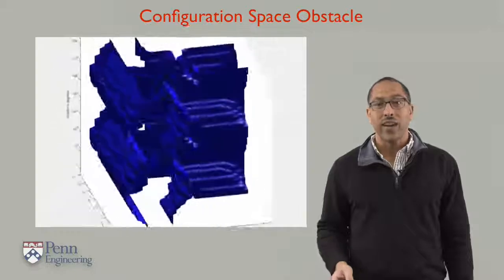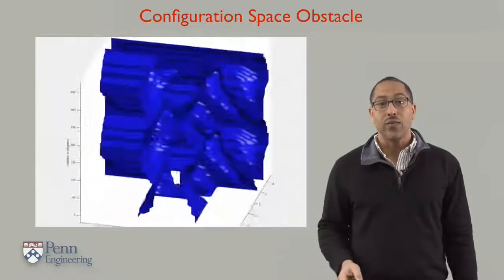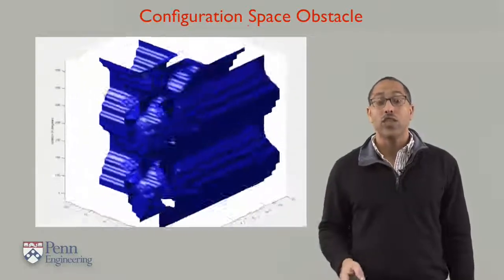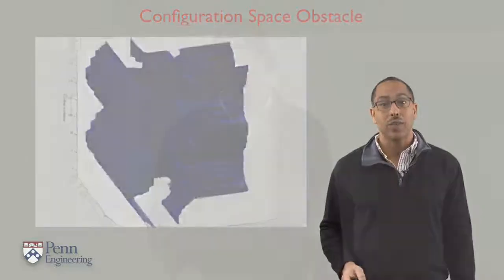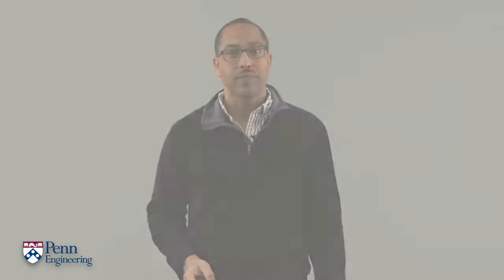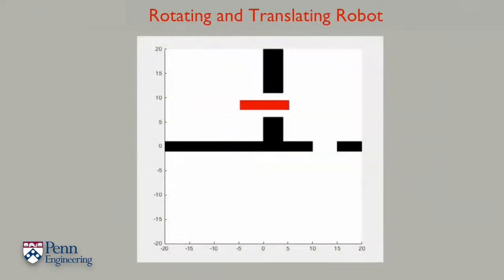Note again that in this figure, the surface that we are visualizing corresponds to the surface of the configuration space obstacle. As before, the basic problem in motion planning is to come up with a trajectory between a start point and an end point that avoids all the configuration space obstacles. This movie shows a robot moving through the space, avoiding all of the obstacles.